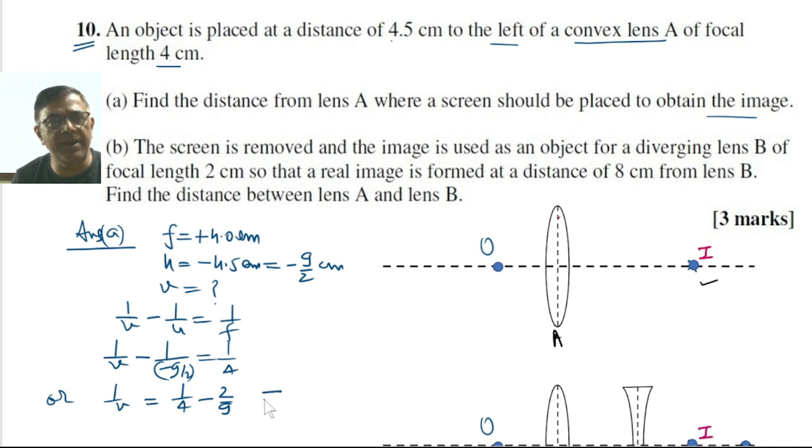This implies that 1 by V equals 9 minus 8 by 36, or V equals plus 36 centimeters. Hence the screen should be placed at a distance of 36 centimeters on the other side of this convex lens.